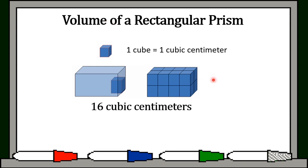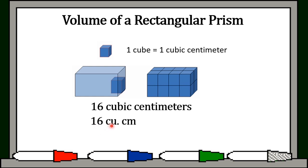Therefore, the volume of this rectangular prism is 16 cubic centimeters. You can write it as 16 cubic centimeters.